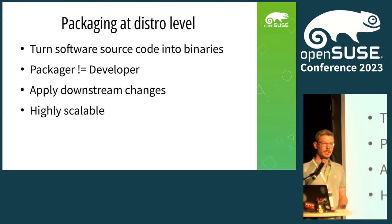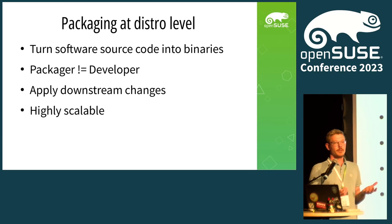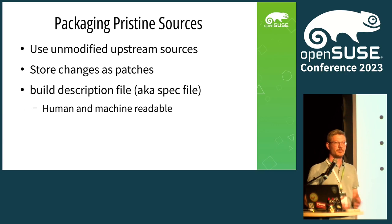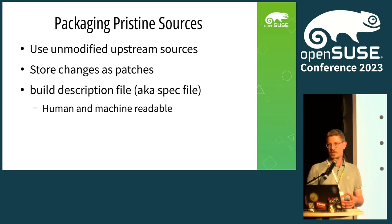A distribution like Tumbleweed consists of about 10,000 packages, so whatever we do in packaging needs to be highly scalable. Especially in maintenance, engineers or security engineers may not be familiar with the package, so a very valuable asset is that they can touch any package without in-depth knowledge. One of the secret sauces is the concept of pristine sources — a concept that even predates RPM. The idea is that you take the unmodified upstream sources and then add your changes as patches. So for example, one bug fix, one patch, or every feature is a separate patch.